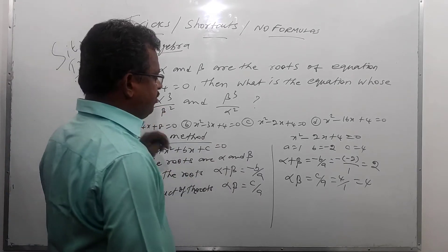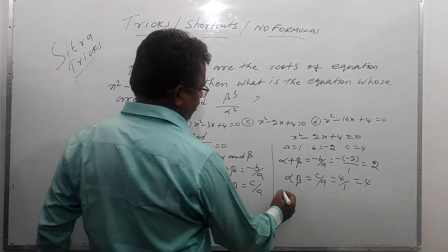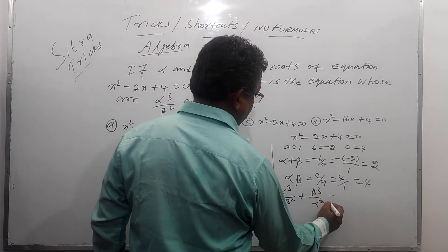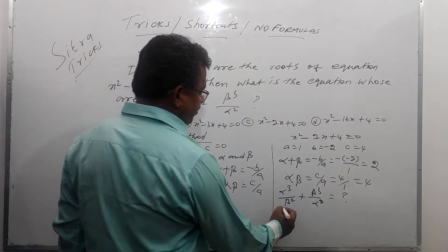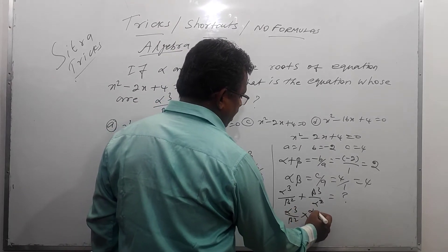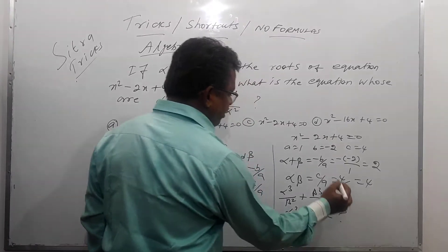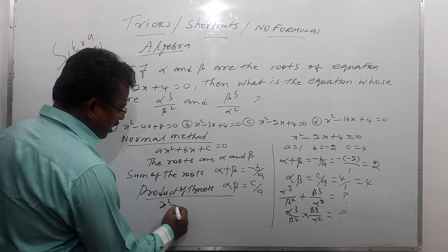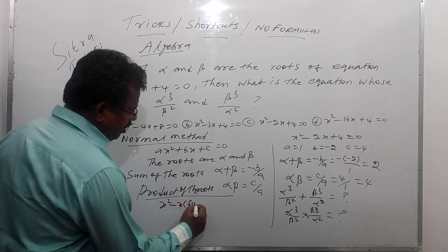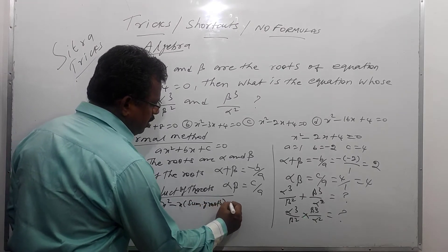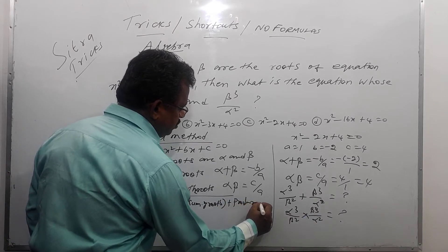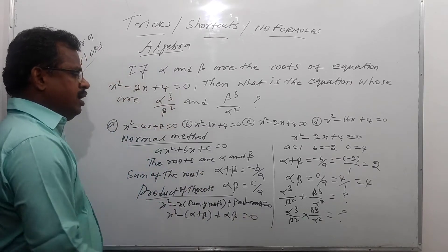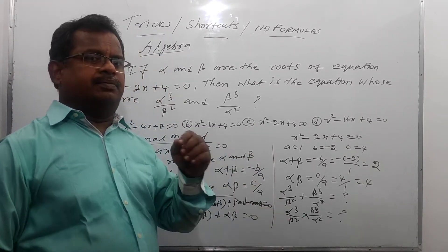Then, the sum of the new roots is alpha cube by beta squared plus beta cube by alpha squared. Find the values. Then product of the new roots is alpha cube by beta squared into beta cube by alpha squared. Find the values. Then substitute into the general equation: x squared minus (sum of roots)x plus (product of roots) equal to 0. This takes too much time — about 4 to 5 minutes.